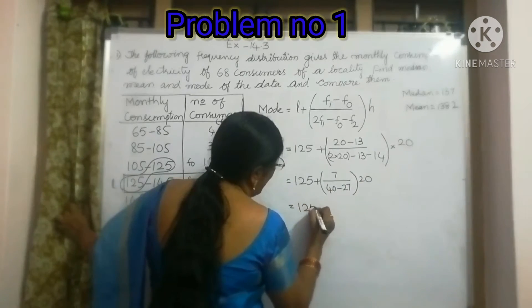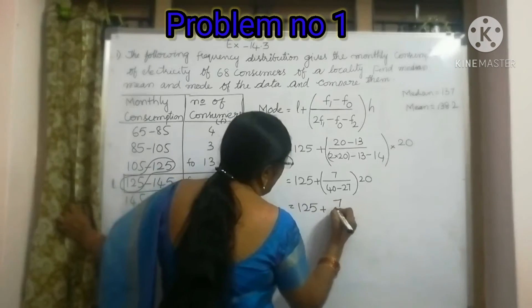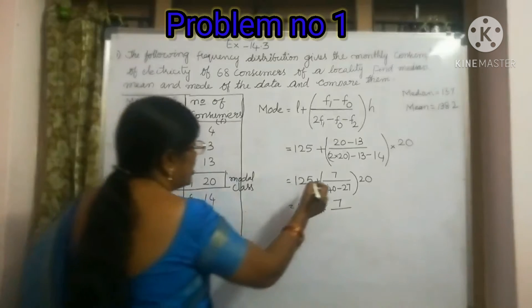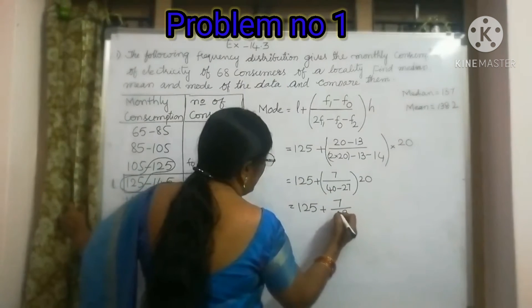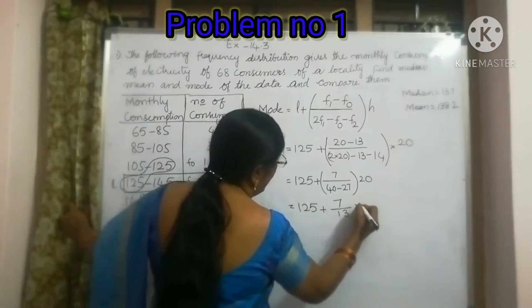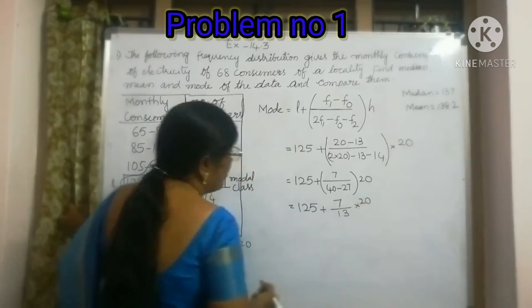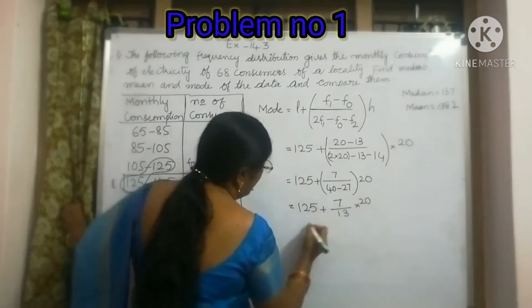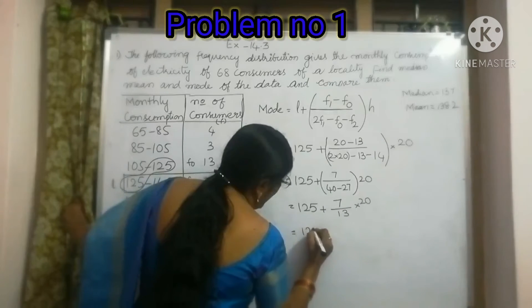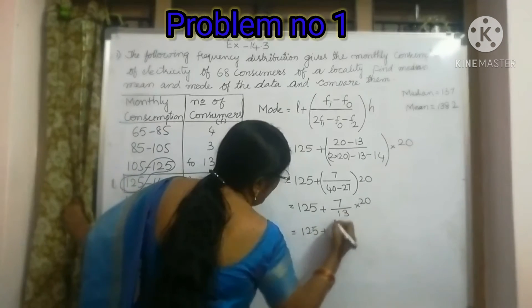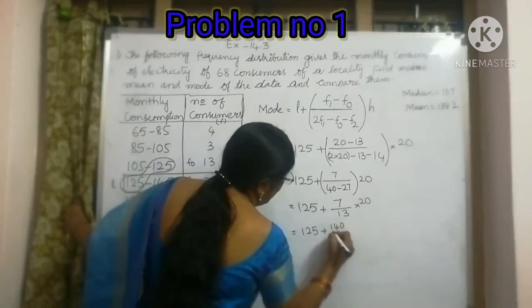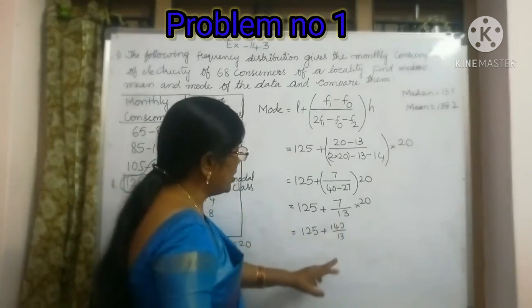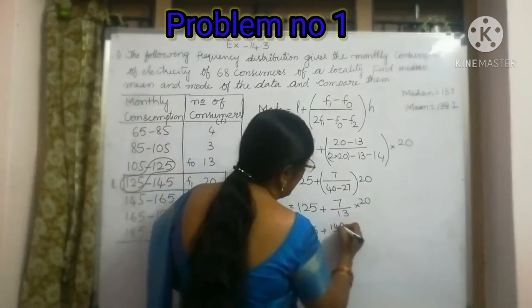This is 125 plus 7 by 40 minus 27. That is 13 into 20. So, 125 plus 140 by 30. We will divide this 140 by 30 and add to this.